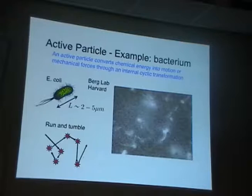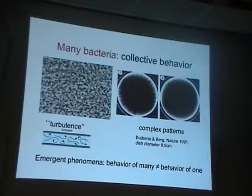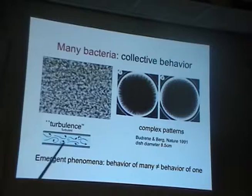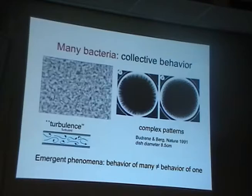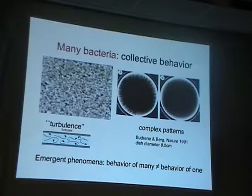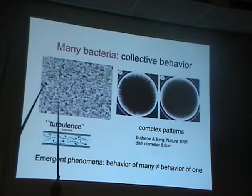When you put many E. coli together, the behavior is actually quite different from that of a single one. A dense collection of E. coli, when well-fed on agar with plenty of sugar, exhibits what looks like turbulent-like motion. This is surprising because a single E. coli swims in a regime where inertia is negligible — the fluid is effectively very viscous to E. coli — so you don't expect turbulent-like flow. Yet the dynamics of a dense collection of E. coli really does look like turbulence.